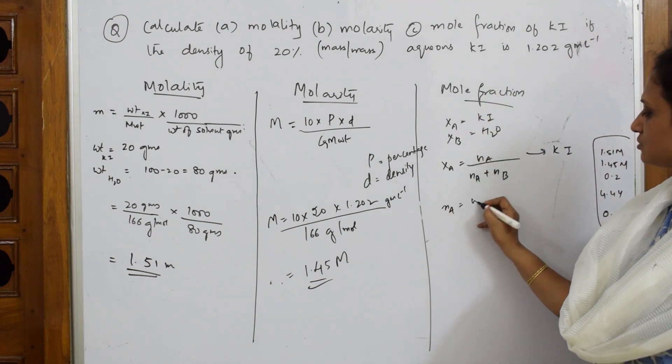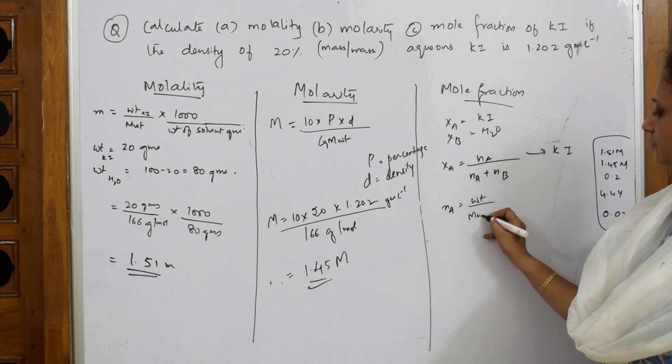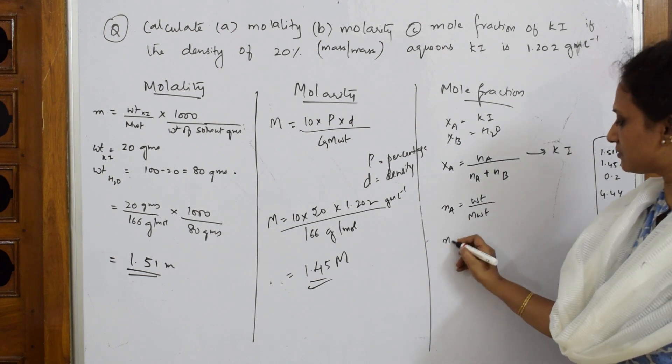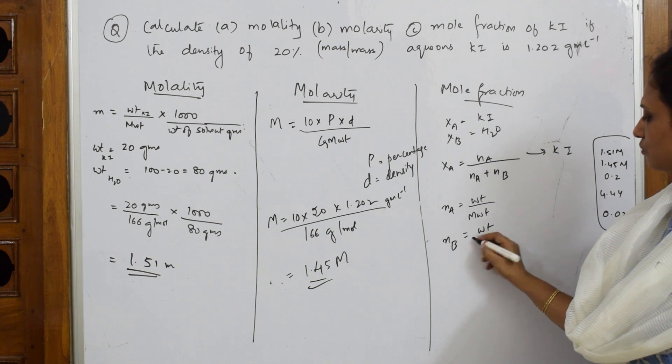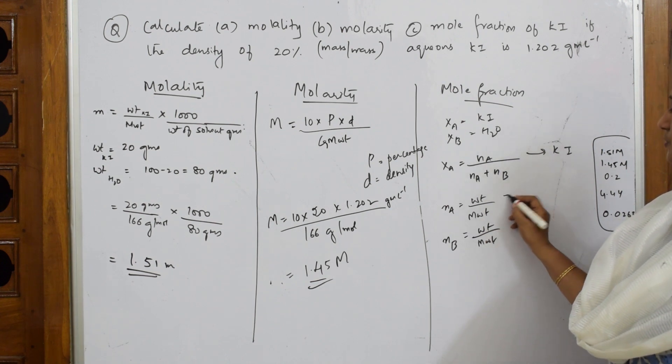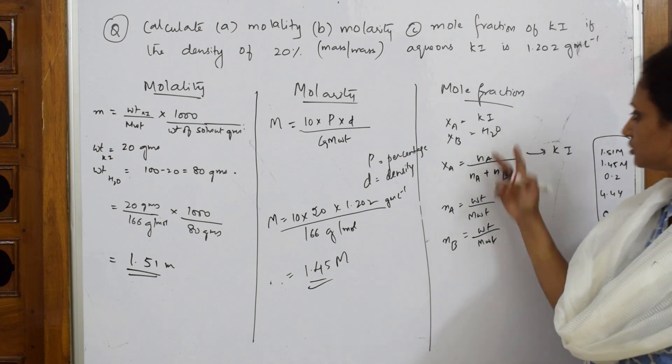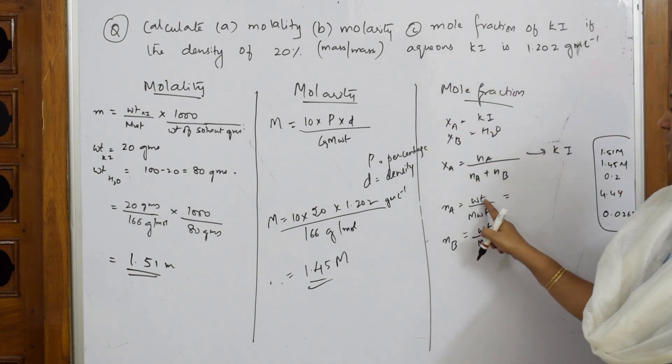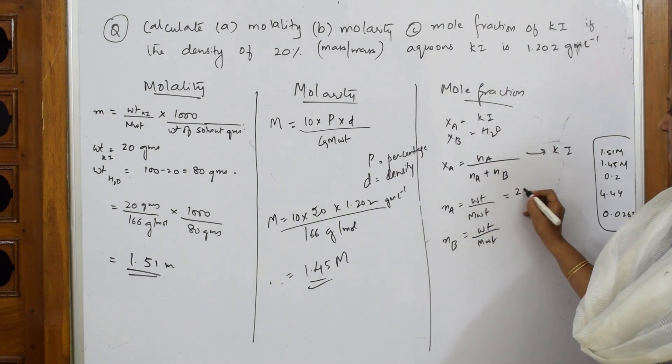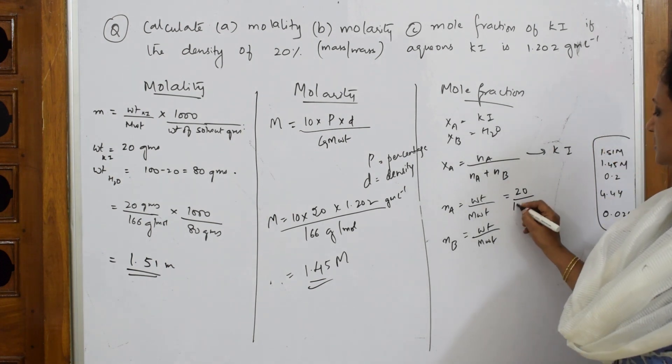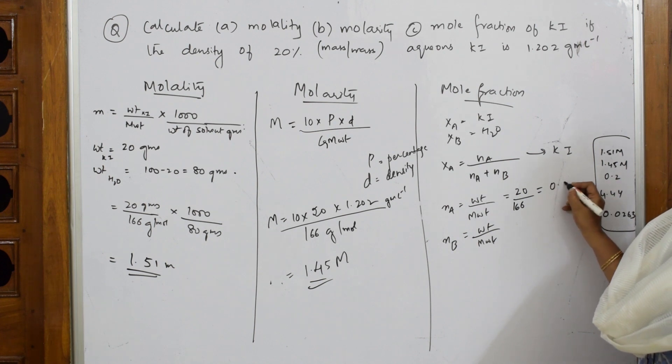What is Na equal to? Na is equal to weight by molecular weight. Nb is equal to weight by molecular weight. This is for potassium iodide and this is for solvent. What is the weight given to us? 20 grams. What is the molecular weight of potassium iodide? 166 grams. When I solve this, I get an answer of 0.2.